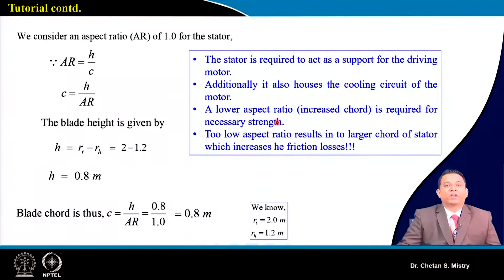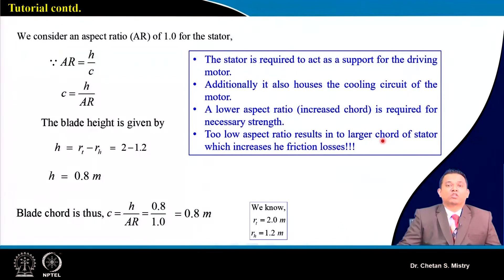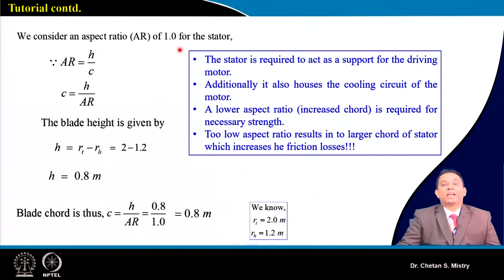A lower aspect ratio configuration provides the necessary structural strength for the rotating device, but too low an aspect ratio means a larger chord, which increases frictional losses due to a larger solid surface area. For this configuration the aspect ratio is roughly selected as 1, giving both the stator blade height and the stator chord as 0.8 m.